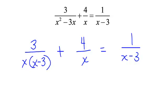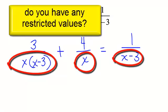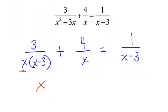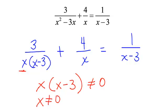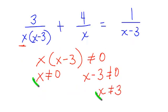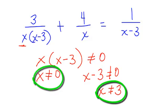But first, what can my x not equal? What are my restricted values? Well, I do have an x as one of my factors and I have an x minus 3, and I realize that these cannot equal 0. So x could not equal 0, and x minus 3 could not equal 0 — which means x cannot equal 3. So x cannot equal 0 and x cannot equal 3.